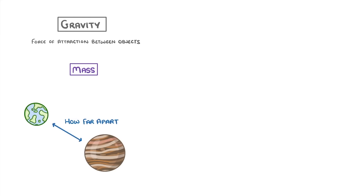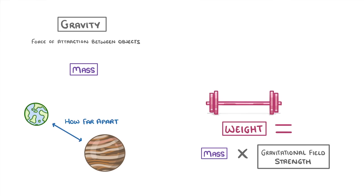Now to very quickly recap, the key takeaways from this video are that gravity is a force of attraction between objects, with the size of that force depending on the mass of those objects and how far apart they are. That weight is equal to mass times gravitational field strength, which is 9.8 newtons per kilo here on Earth.